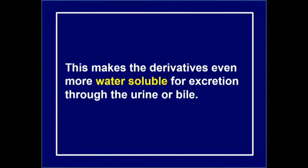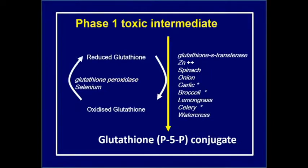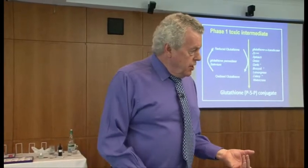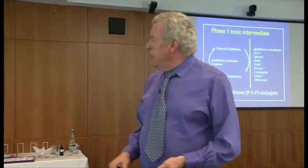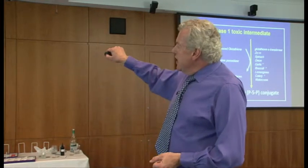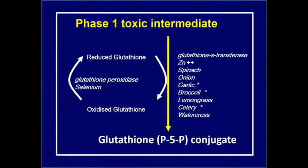Phase two makes the derivatives more water soluble. We may use glutathione. It's made from the three amino acids: glutamic acid, glycine, and cysteine. It recycles. You often purchase reduced glutathione, which is what we manufacture. Reduced glutathione takes a free radical, becomes oxidized, and then recycles. The enzyme that recycles glutathione, continuing to help us detoxify, is called glutathione peroxidase.